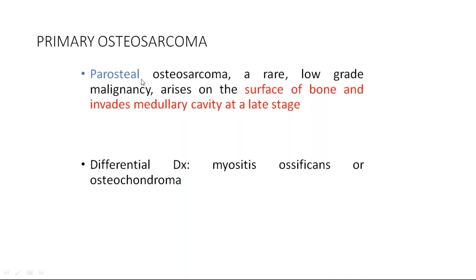Parosteal osteosarcoma is a low-grade malignancy occurring on the surface of the bone. It differs from periosteal in that it invades the medullary cavity at the late stage. The differential diagnosis for parosteal osteosarcoma includes myositis ossificans and osteochondroma, which must be ruled out to confirm the diagnosis.